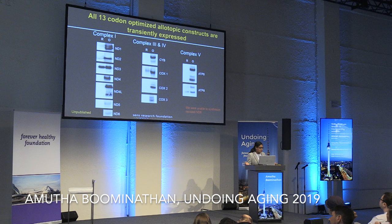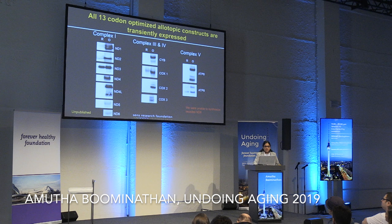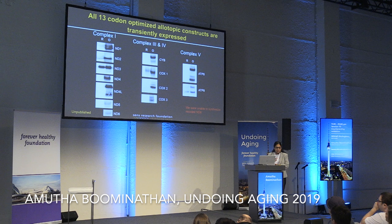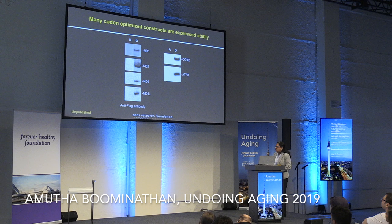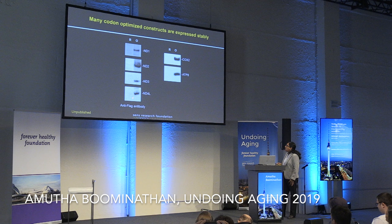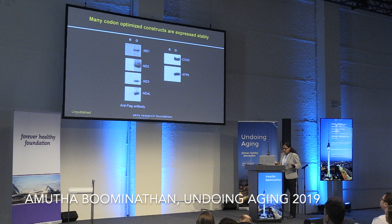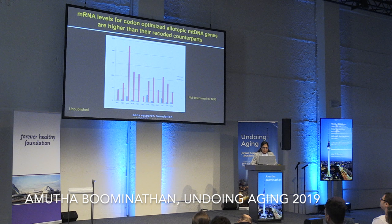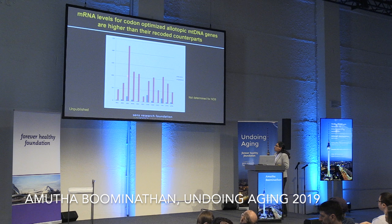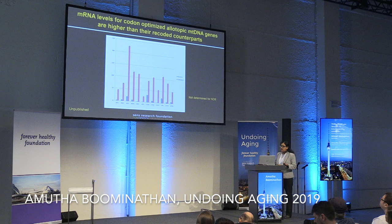All 13 proteins are expressed transiently. To put it to any use, they must express under stable conditions. We selected 25 lines for four weeks on puromycin. Not all are stably expressed, but many complex 1 genes — ND1, ND2, ND3, ND4L — are all stably expressed, and COX2 from complex 4 and ATP8 from complex 5 are also robustly produced. The mRNA abundance for codon-optimized versions is many-fold higher than their recoded counterparts.